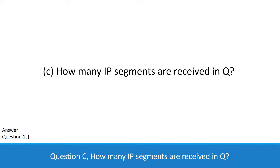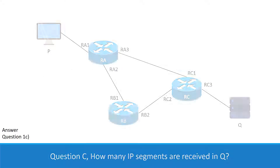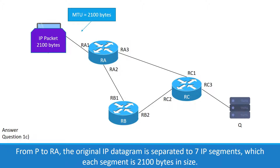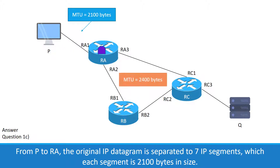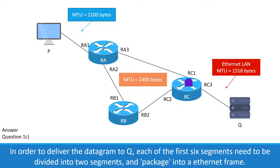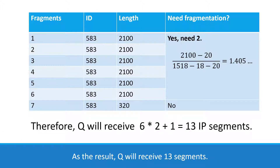Question 1c: How many IP segments are received in Q? From P to RA, the original IP datagram is separated into 7 IP segments, each 2100 bytes in size. However, the MTU of the link from RC to Q is 1518 bytes. In order to deliver the datagram to Q, each of the first six segments needs to be divided into two segments and placed into an Ethernet frame. As a result, Q will receive 13 segments.